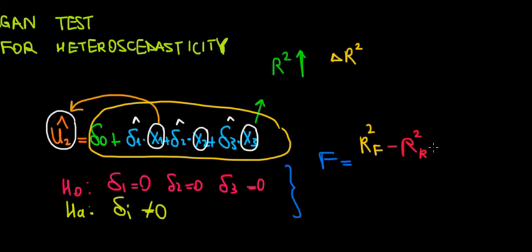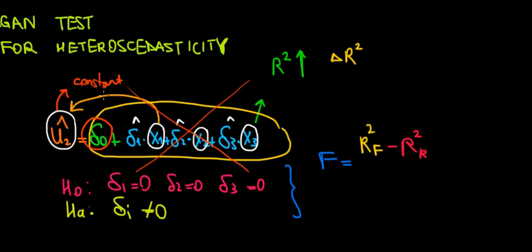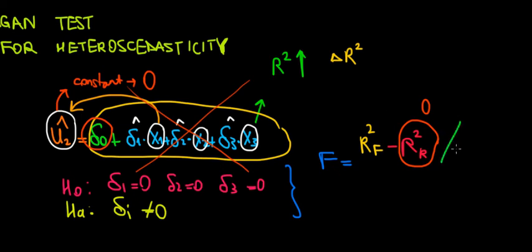In the restricted model, we don't take into account these variables, so the variation is constant. When we have a constant variation, the dependent variable is constant — that means there is nothing to explain. There is no variation to explain in the results because the results are constant. So the R-squared, because there's nothing to explain by the model, is going to be equal to 0. And recall that because we are inflating the R-squared by adding variables, we must control for that and divide by the number of additional variables we're using — which is 1, 2, 3 — so we're dividing by 3.